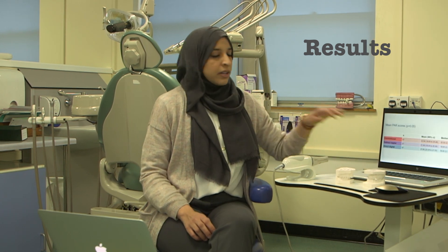The final sample consisted of 67 patients with a mean age of 15 years. We found that there was no significant difference in mean PAR scores between the three different study groups. There was also no significant difference between the first and second scoring for any of the three groups.